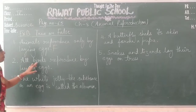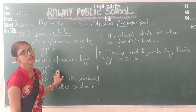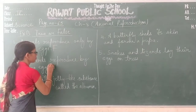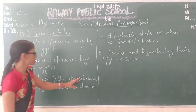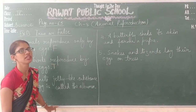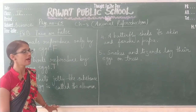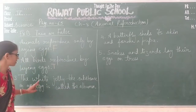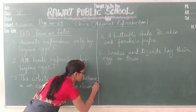Statement 2: all birds reproduce by laying eggs. Birds like the eagle reproduce by laying eggs only, so this statement is true — we write T. Statement 3: the white jelly-like substance in an egg is called the albumin. As discussed, the outermost covering is the eggshell, and below it is a white jelly-like substance known as albumin. This statement is true, so we write T.